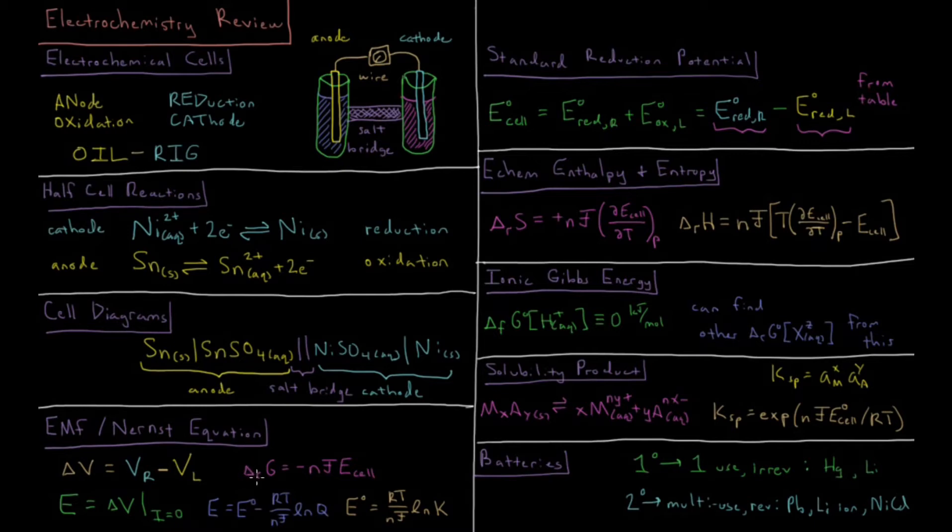The Gibbs energy of reaction for this cell is equal to minus the number of moles of electrons transferred times Faraday's constant times the EMF of the cell.